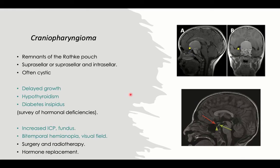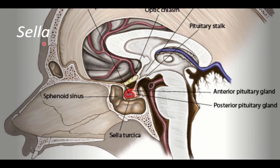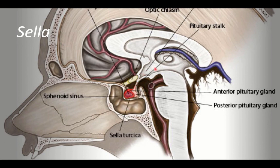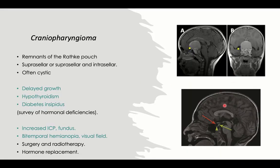The sella turcica is a bony groove in the skull in front of the brainstem, with the sphenoid sinus below. Inside the sella is the pituitary gland, hung by the pituitary stalk to the hypothalamus, and roofed by the optic chiasm. A tumor arising from embryological remnants of Rathke's pouch in this location is called craniopharyngioma. It can be suprasellar, infrasellar, or intrasellar, and is often cystic but can be solid.